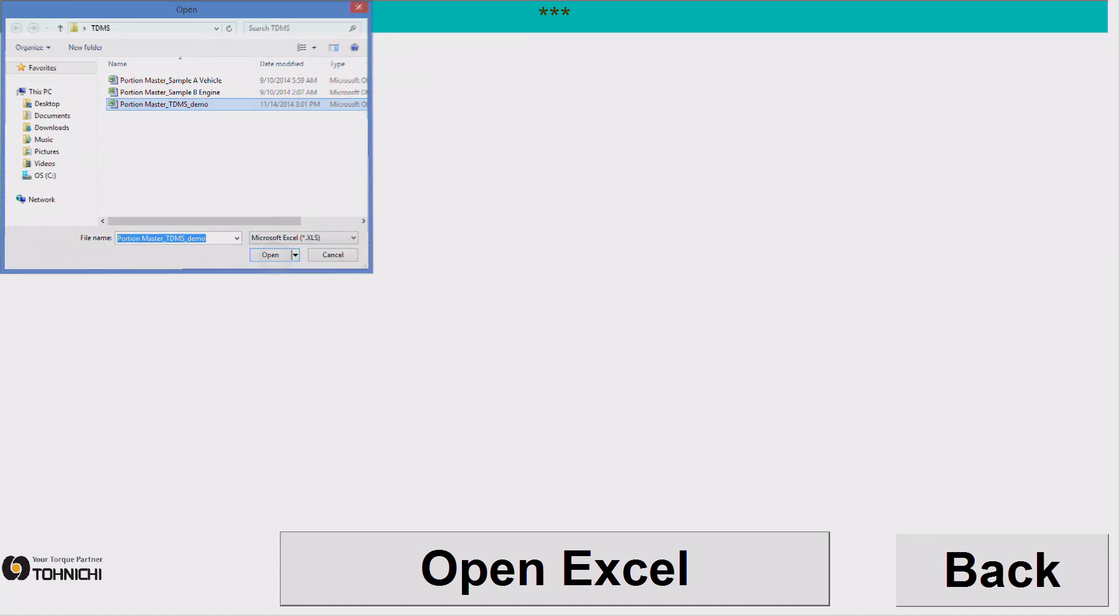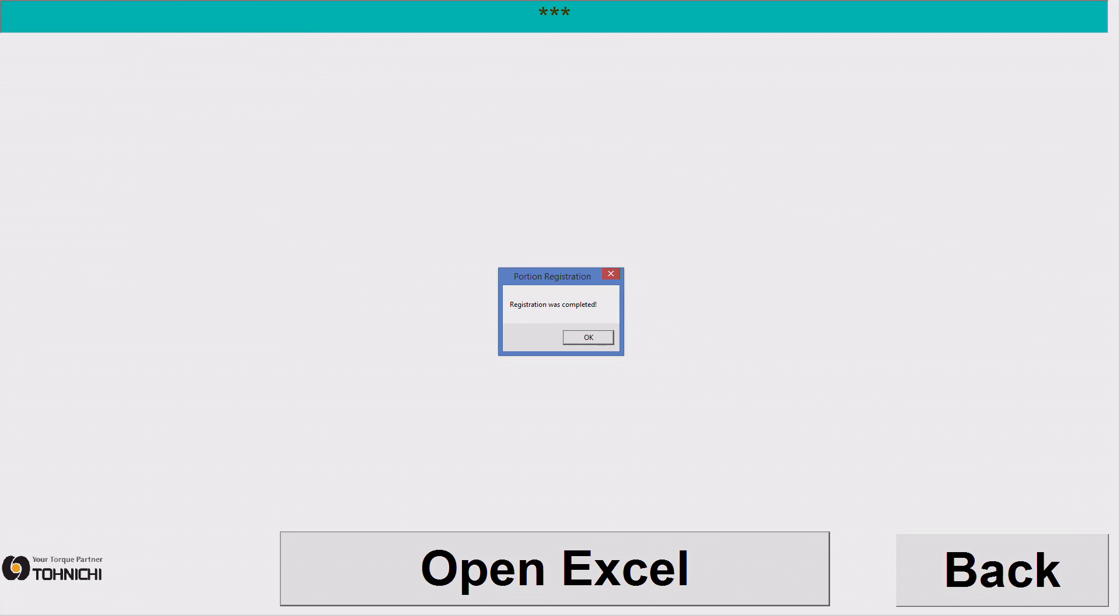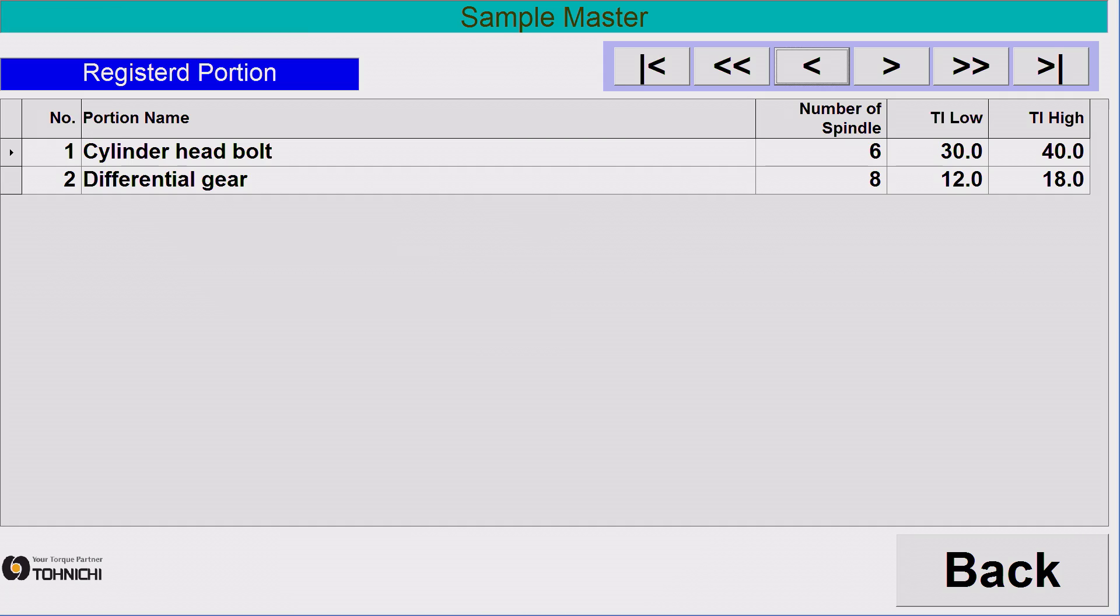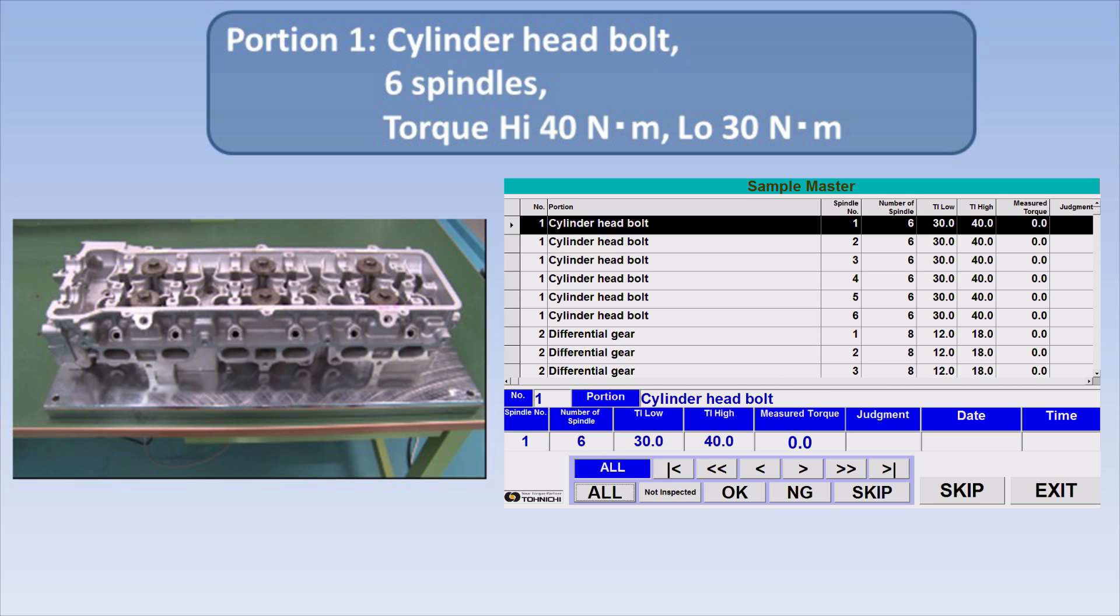On the TDMS software, portion name, spindle number and high-low limit values will be displayed. To start the operation, just follow the sequence instructed on the TDMS. You can confirm what portion you are going to operate and also check the details of process during operation.